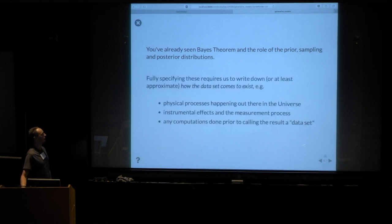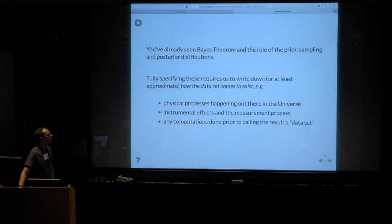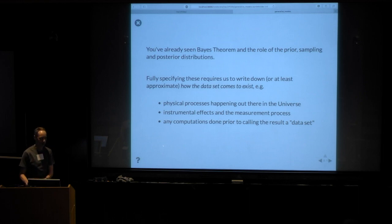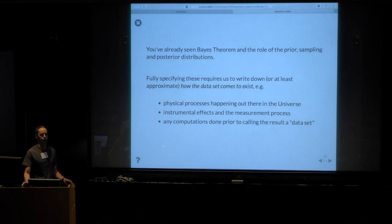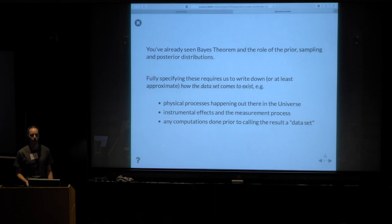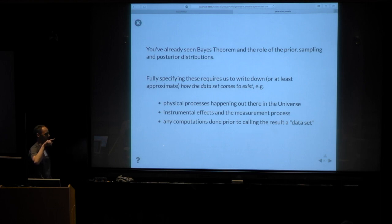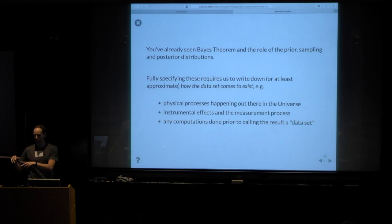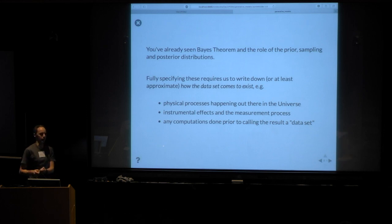The key message is that if we're actually going to write down expressions for what these things are, then at least in our brains we need some kind of approximate vision of how the data on our computers came to be — all the way from out there in the universe where something happened and photons were emitted, propagated through space and the galaxy and atmosphere and telescope optics, eventually becoming numbers recorded on a hard drive.